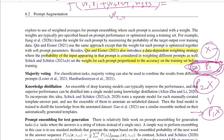Some works assign each prompt a weight proportional to its accuracy on the training set. For prompts p1, p2, and p3, you test each on the training set and use the proportion of correct answers as the weight. These are data-dependent approaches — based on the data the language model was trained on, you assign a prior to each prompt.